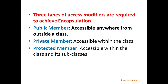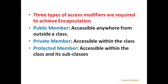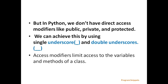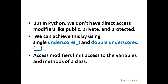Public member, which is accessible anywhere from outside a class. Private member, which is accessible within the class. And protected member, which is accessible within the class and its subclass. In Python, we don't have direct access modifiers like public, private, and protected. We can achieve this by using single underscore and double underscore. Access modifiers limit access to the variables and methods of a class.